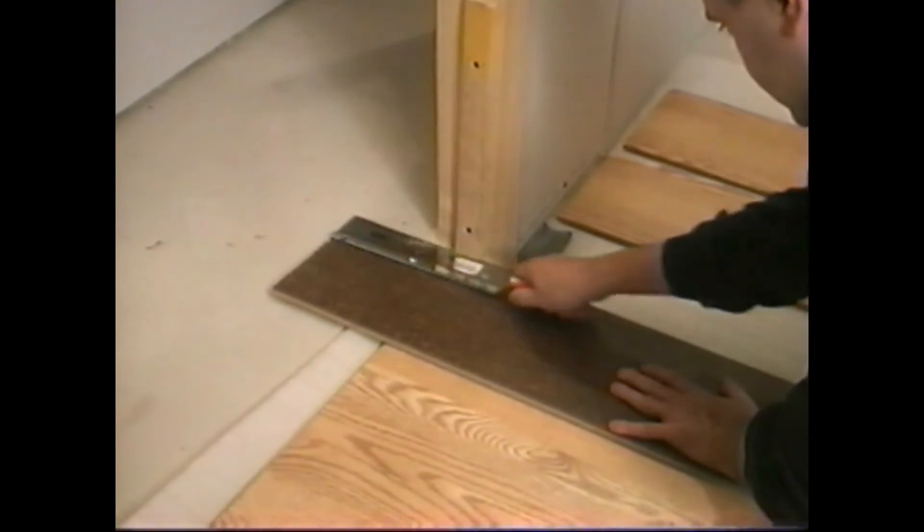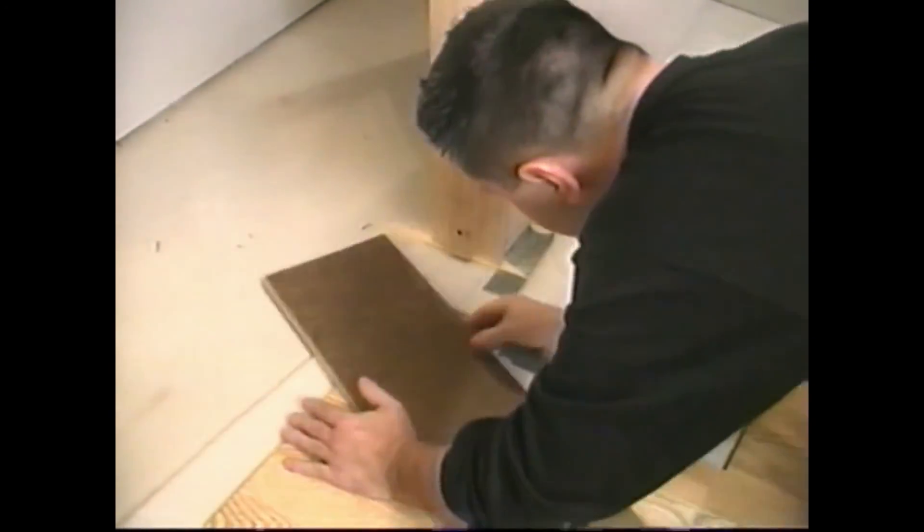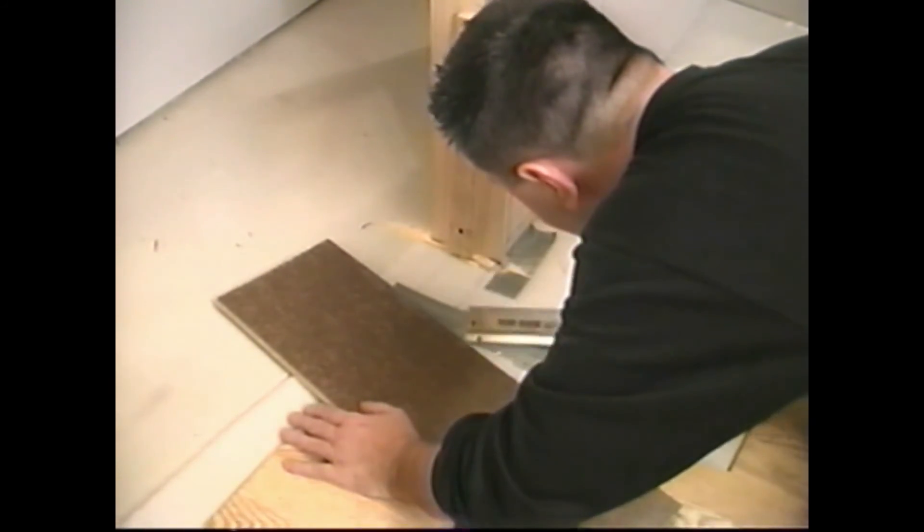You cannot place a plank because of a door moulding. Here is the solution. Clear the space by cutting the door moulding with a saw. You will thus free up the room you need to maneuver.